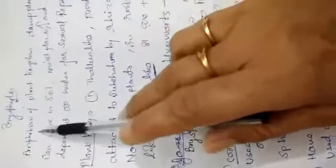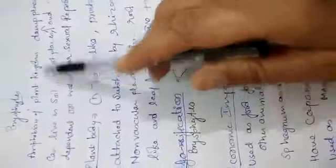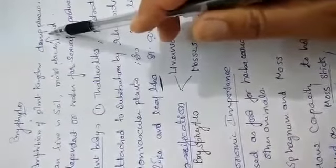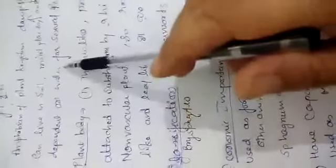Bryophytes general characteristics: they are the amphibian of the plant kingdom. They grow in damp places, moist places. They can live in soil, but for reproduction, sexual reproduction, they depend on water. So they are called as amphibian of the plant kingdom.